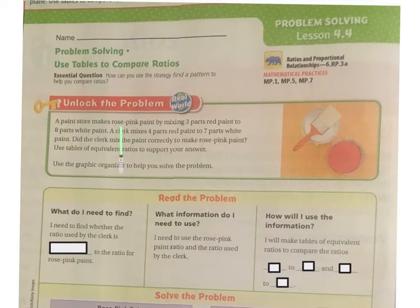Let's unlock the problem. A paint store makes rose pink paint by mixing three parts red paint to eight parts white paint. A clerk mixes four parts red paint to seven parts white paint. Did the clerk mix the paint correctly to make the rose pink paint? Use the table of equivalent ratios to support your answer. Use the graphic organizer to help you solve the problem.